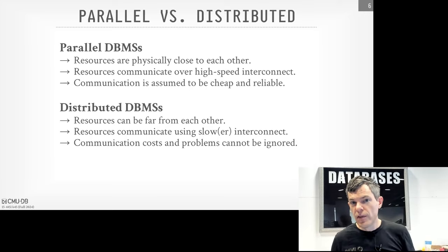Just because a system supports multiple workers doesn't mean it can always do intra-query parallelism. MySQL is probably the most famous example — it uses the thread per worker model and is a multi-threaded database system, but when one query shows up, only one thread can execute that query in its entirety; they can't split it up across multiple cores. And pretty much every system based on Postgres or Redis is probably a single process, single worker system unless you fork those things.